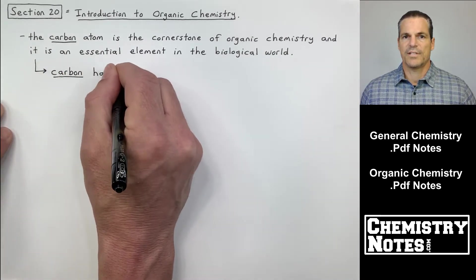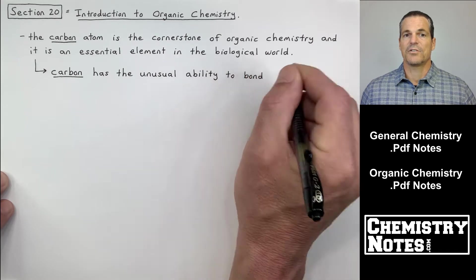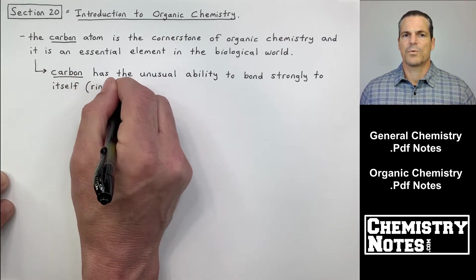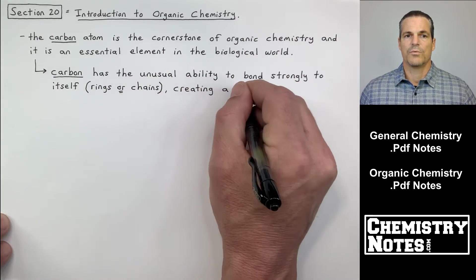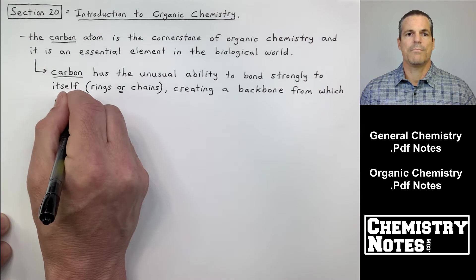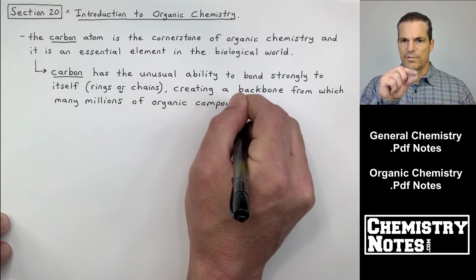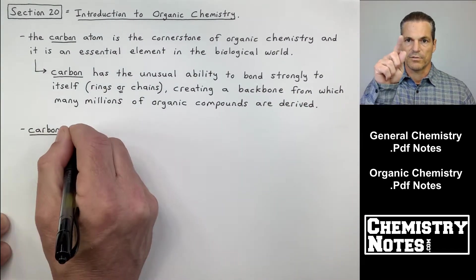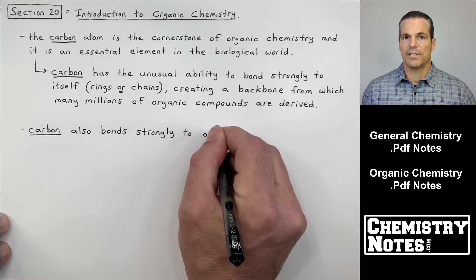The first bullet point says the following: the carbon atom is the cornerstone of organic chemistry and it's an essential element in the biological world. Carbon has the unusual ability to bond strongly to itself in rings or chains, creating a backbone from which many millions of organic molecules can be formed. So carbon can form chains like a carbon single bonded to a carbon single bonded to a carbon and just link like chains, or they can also form rings. Sometimes it's a single bond, sometimes it's a double bond, sometimes it's even a triple bond.